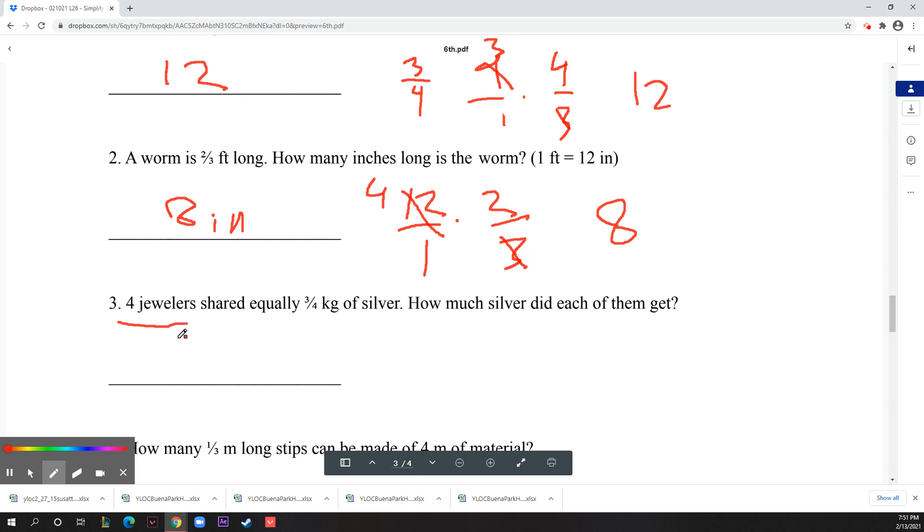Number three: four jewelers shared equally three quarters kilograms of silver. How much silver did each of them get? You're taking three fourths of a kilogram of silver and dividing it by four, because it needs to be split among four different people. You take the three fourths kilograms and divide by four, which is actually just multiplying by one fourth. Multiply across, you get three over sixteen. Everybody gets 3/16 kilograms of silver.